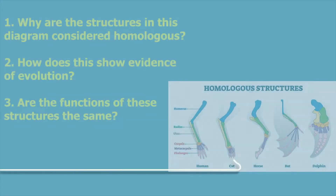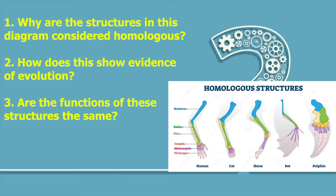So a few questions: First, why are the structures in this diagram considered homologous? Second, how does this show evidence of evolution? And third, are the functions of these structures the same?